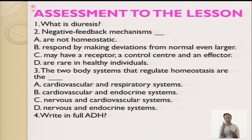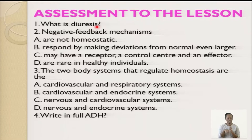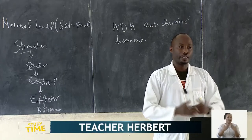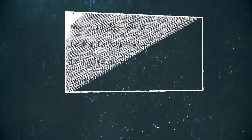Let's go to the home assignment. We have four questions: Number one, what is diuresis? Number two, what is negative feedback? Number three, write two body systems that regulate homeostasis. Number four, write about ADH. Thank you very much for watching and listening. Enjoy the rest of the day. See you next time.